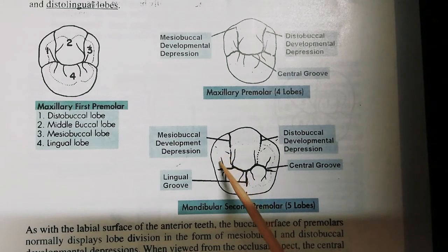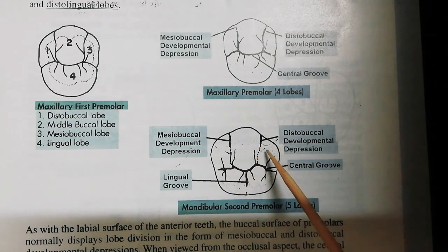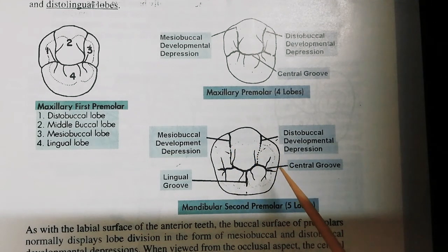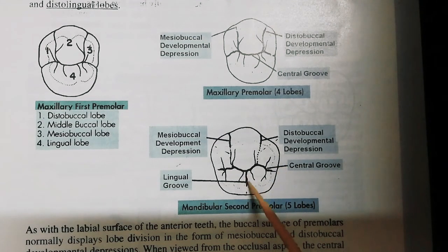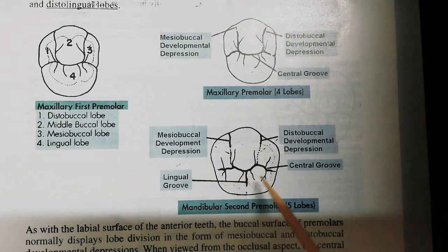Hence this is the mesiobuccal lobe, this is the middle buccal lobe, and this is the distobuccal lobe. Now, instead of having one lingual lobe, it has two lingual lobes divided by the lingual groove. So this is the mesiolingual lobe and this is the distolingual lobe.